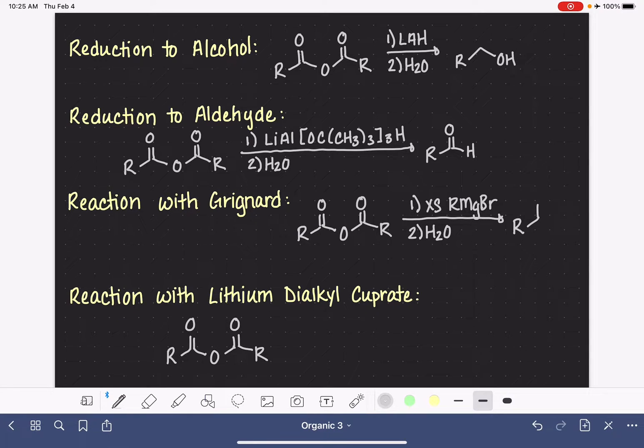That's going to convert the carbonyl group to an alcohol, and it's going to add two R groups from the Grignard. So two R groups from the Grignard get placed on what used to be the carbonyl carbon.